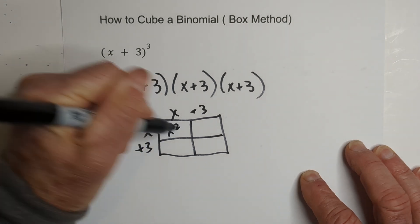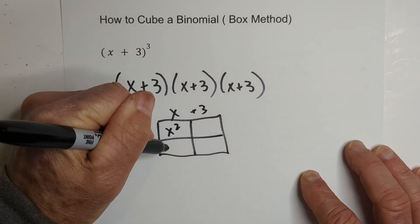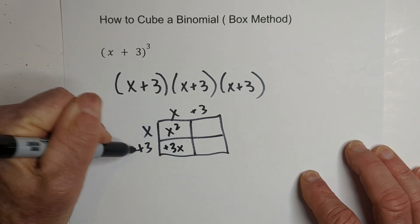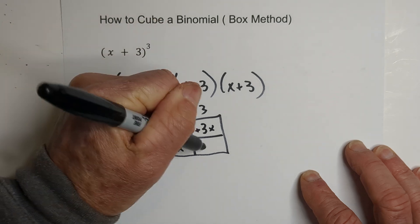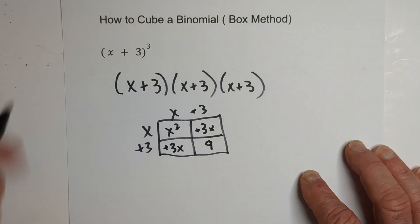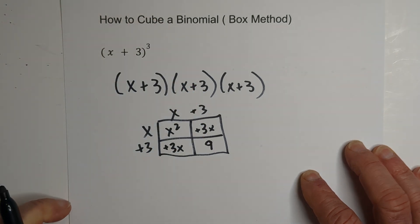Then we're going to multiply what we have: x squared, and then we have a positive 3x. And then we have a positive 3x, and then we have 3 times 3 is 9.